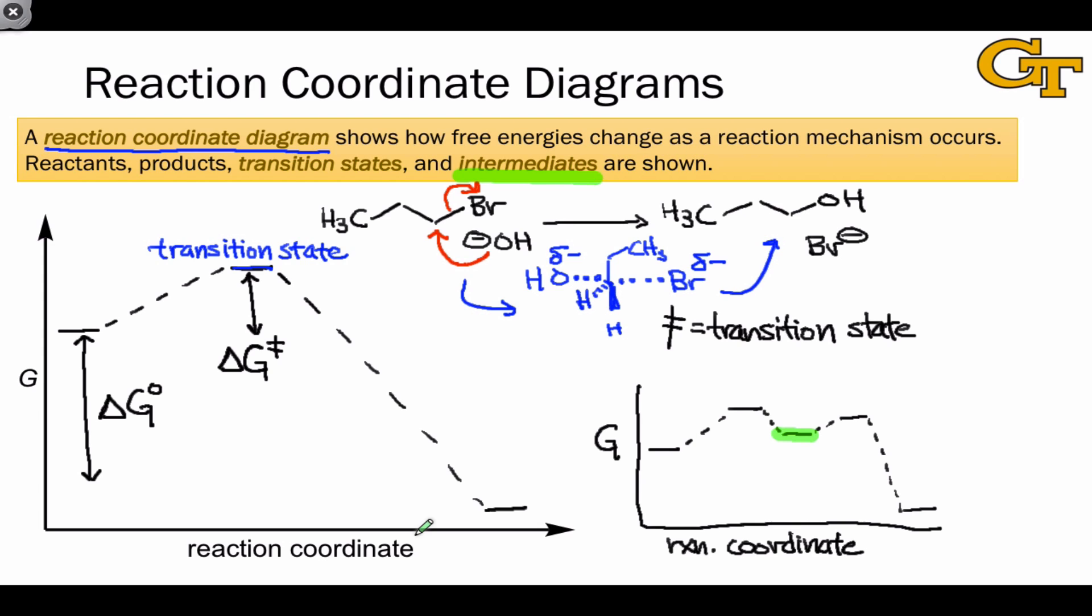Stable species with discrete lifetime that eventually transform further to reach the products. The main utility of a reaction coordinate diagram is that it shows us how stability changes over the course of a reaction mechanism.